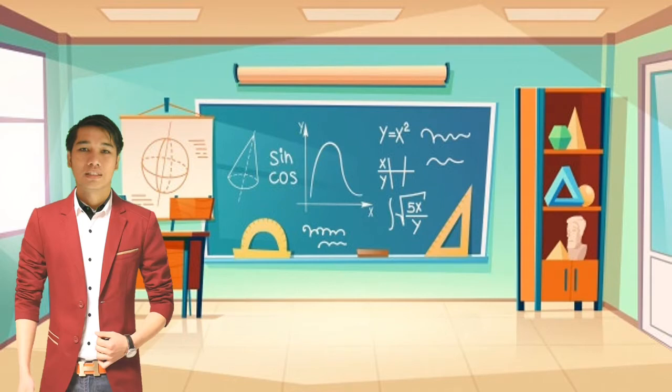Pag sinabi nating sequence, ito ay tumutukoy sa pagkakasunod-sunod ng pangyayari sa buhay. Halimbawa, ang palay o buto — mula sa pagtatanim ng buto, paglaki ng halaman, hanggang sa pag-aani. Makikita rin natin ito sa paglaki ng bata mula sa pagiging sanggol hanggang sa pagtanda, at sa paglaki ng populasyon ng Pilipinas o sa buong mundo, pagdami ng bakteriya, at marami pang iba.